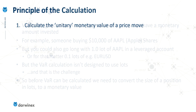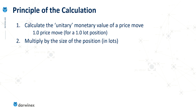The principle behind the calculation I use personally is that I first calculate what I call a unitary monetary value of a price move in the particular asset I have a position in. By unitary, I mean a price move of 1.0 for a 1.0 position size. This is actually the most difficult part of the calculation. Once you have this, you simply multiply it by the actual position size you have, and then multiply by the asset's current price.